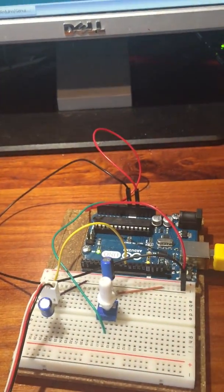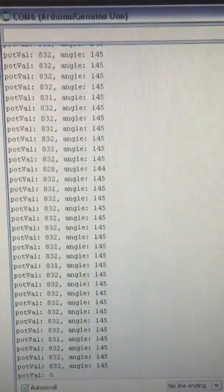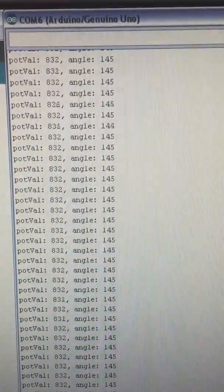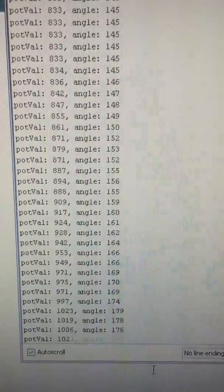If we go to the serial output on COM6, we see the readings of the potentiometer and the angle. You can see them changing.